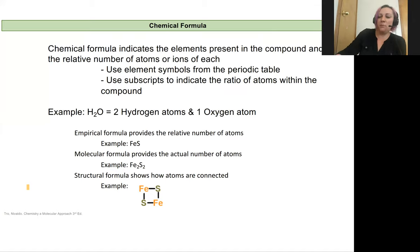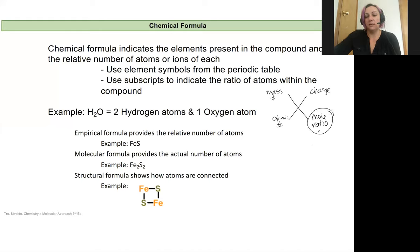Before, when we had our isotope symbols, we always had our atomic number in the lower left, our mass number in the upper left, our charge up in our upper right-hand corner. Now in the lower right-hand corner we're going to put our mole ratio. We haven't talked about the mole yet, so really this means the number of atoms relative to other atoms in the compound.